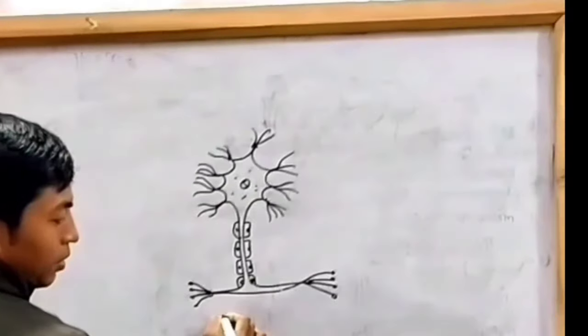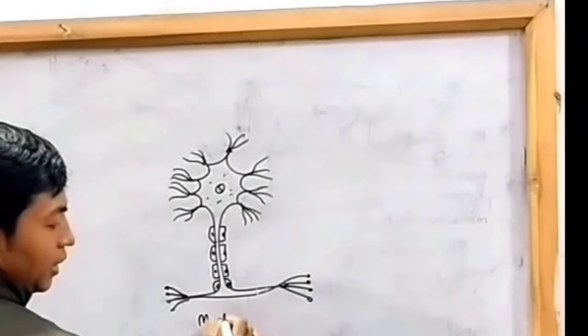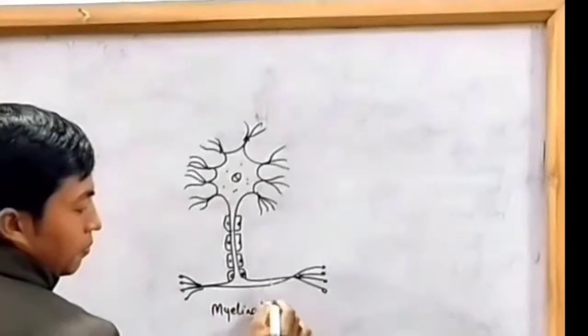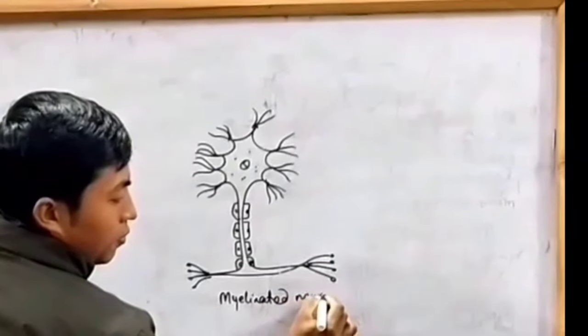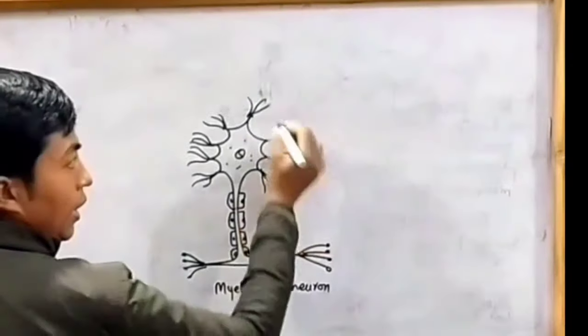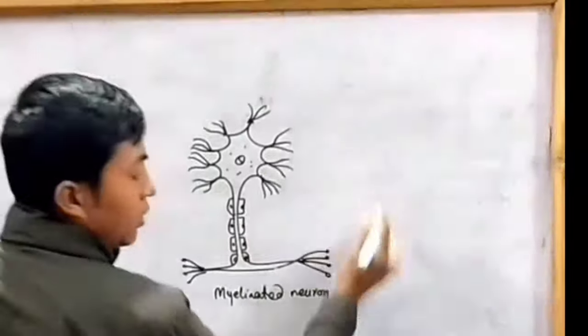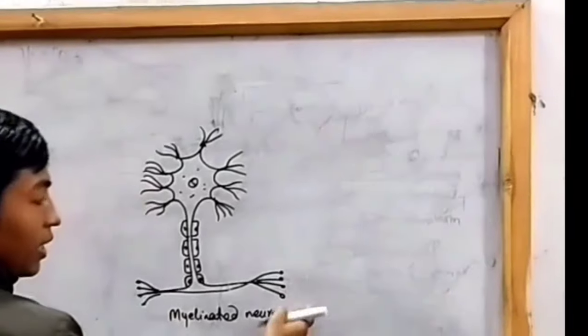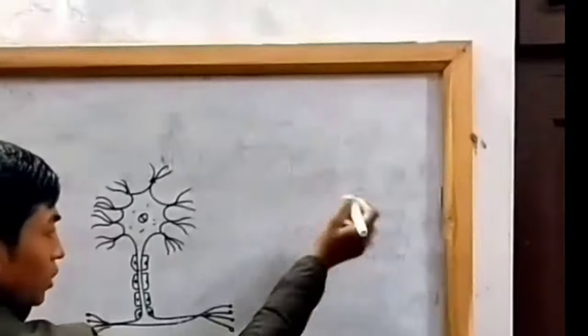This is the figure of a myelinated neuron, and next is a non-myelinated neuron.